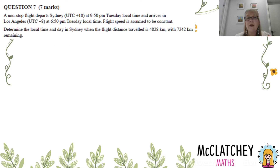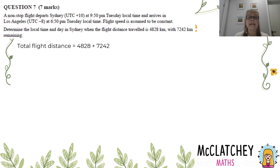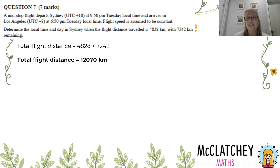This question has a lot going on, so we might want to start by working out some flight distances. Part way in we've got a distance of 4,828 km and there's 7,248 more to go. Adding those two together gives us a total flight length of 12,076 kilometres. Now I can use that information to work out some more things.